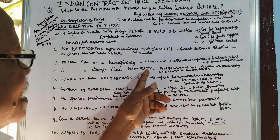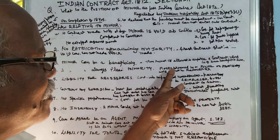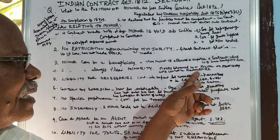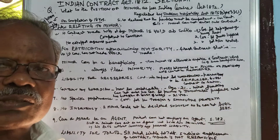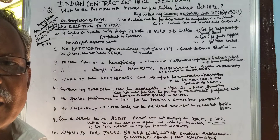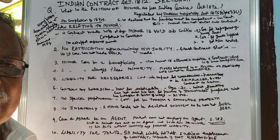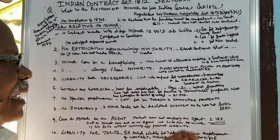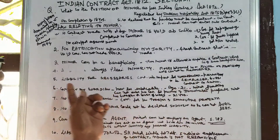Money advanced to a minor on a promise or promissory note cannot be recovered. If money is given as a loan to a minor, even on the basis of a promise or note, it cannot be recovered. The money simply cannot be recovered.